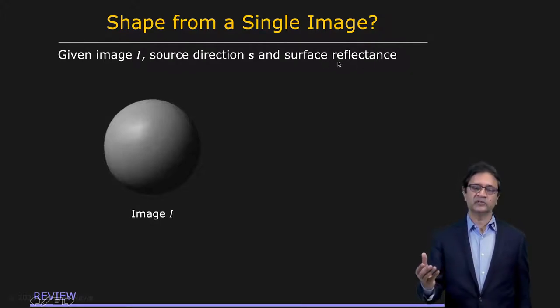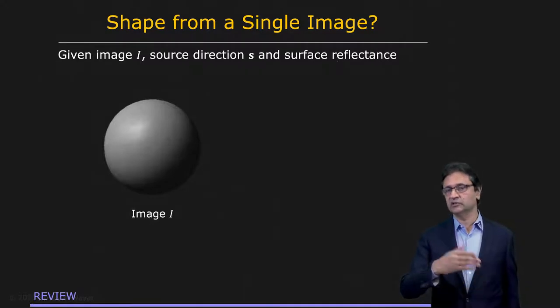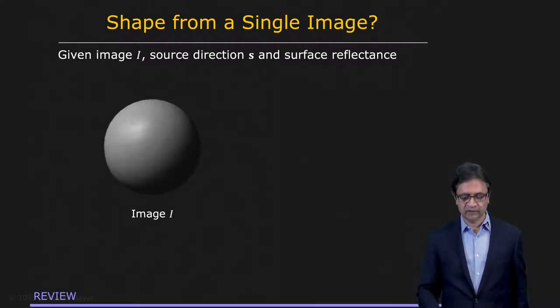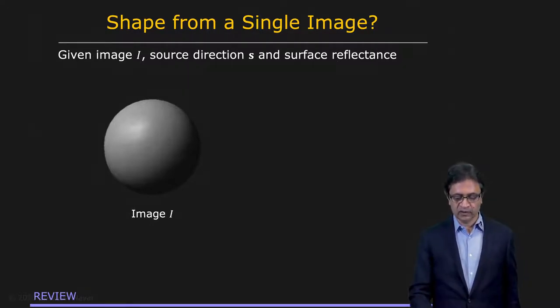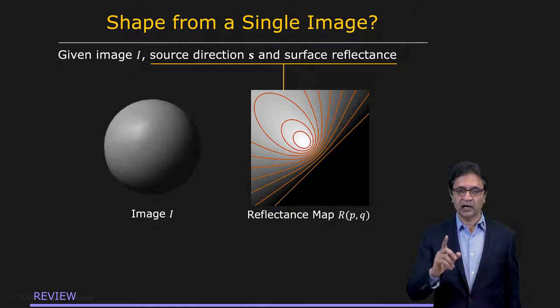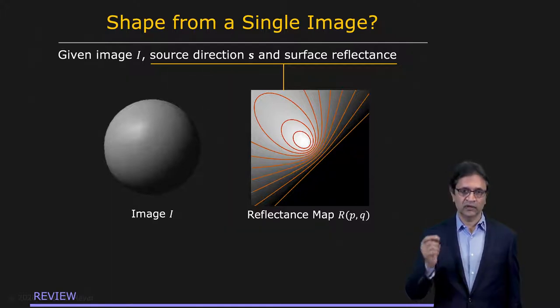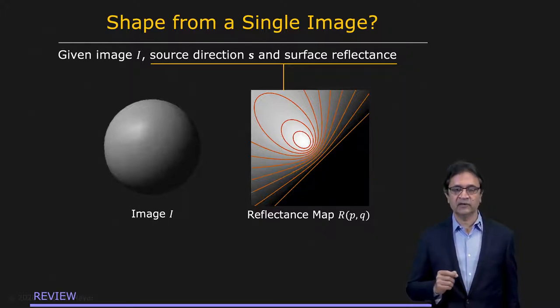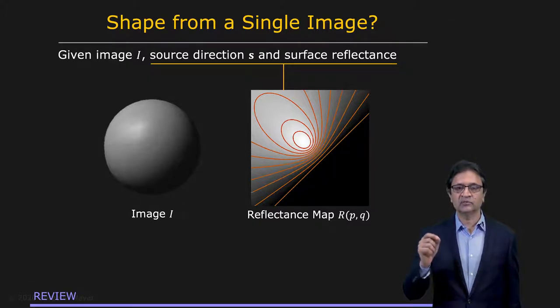We'll assume for our purposes here that the reflectance of the object is uniform over the entire object. And we know that this combination of the source and the reflectance can be used to compute what's called a reflectance map R(p,q). What does R(p,q) give us? For any given surface normal, surface orientation p,q, we can plug in the p,q value into the reflectance map and it will tell us what the intensity is that it will produce in the image.